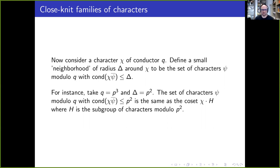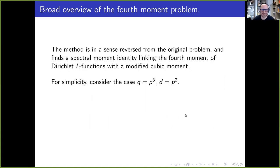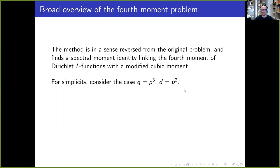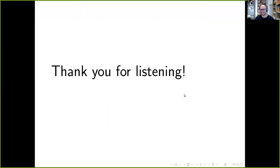The overall argument looks almost circular: we start with a cubic moment family, end up with a fourth moment problem modified by a character sum G, bound G, and then to solve the resulting fourth moment along a coset we go back to a different cubic moment. But it's not circular because we're putting in absolute values and doing estimates along the way. Thanks to everyone for listening.